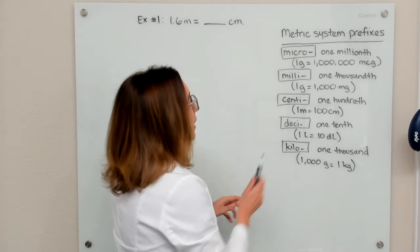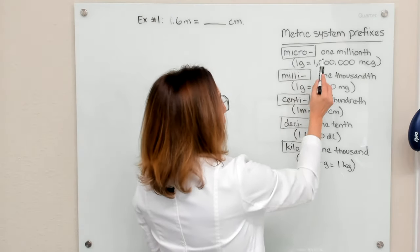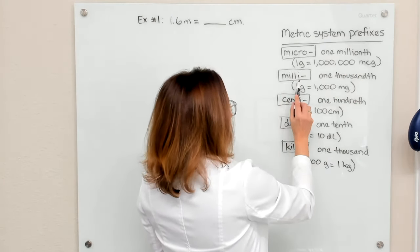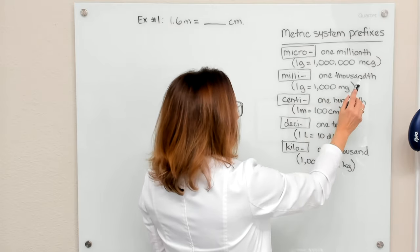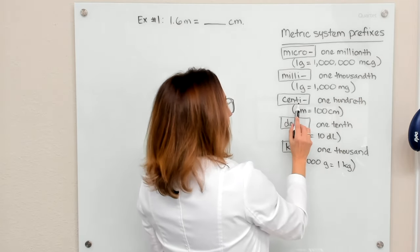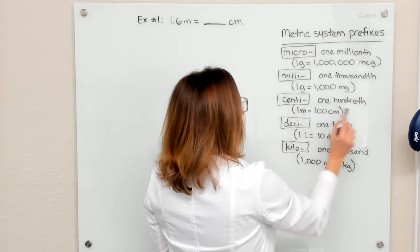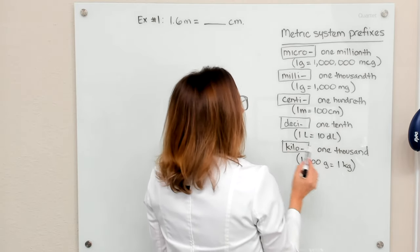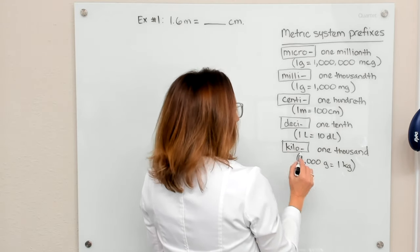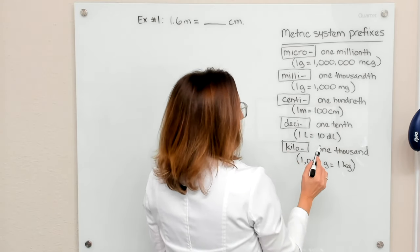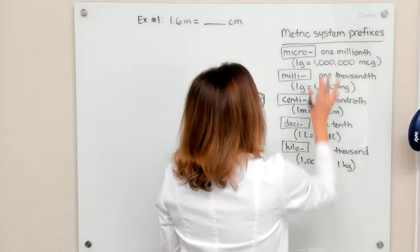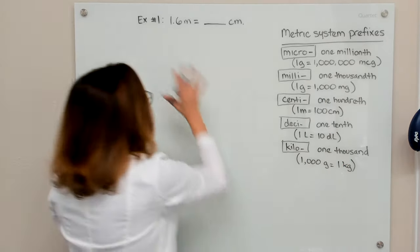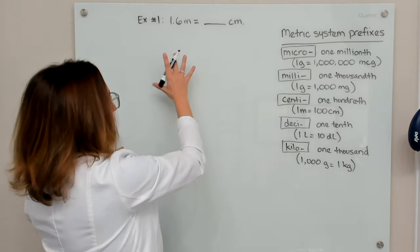We have micro, which means one millionth; milli, which means one thousandth; centi, which means one hundredth; deci, which means one-tenth; and kilo, which means one thousand. Definitely memorize those, because you need them to solve the problems.